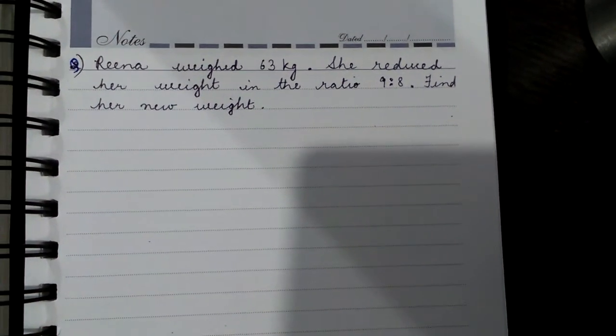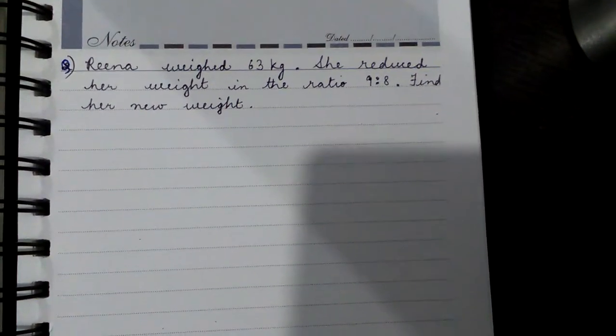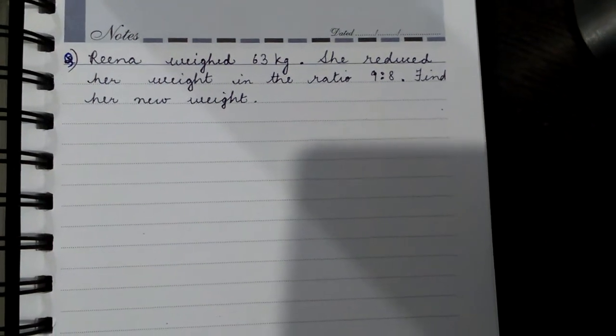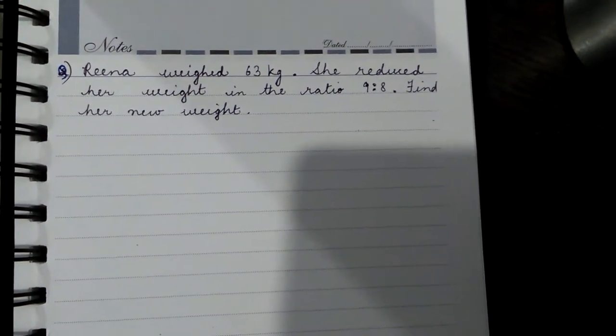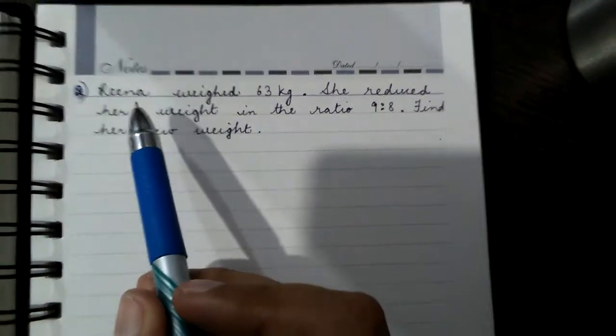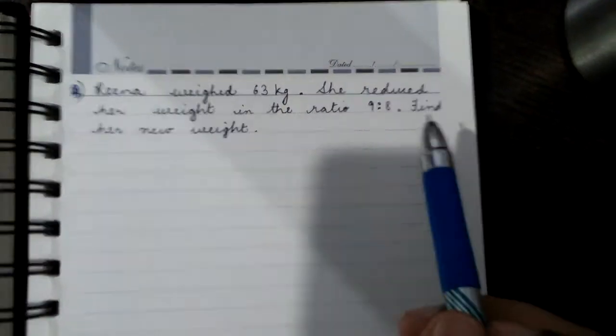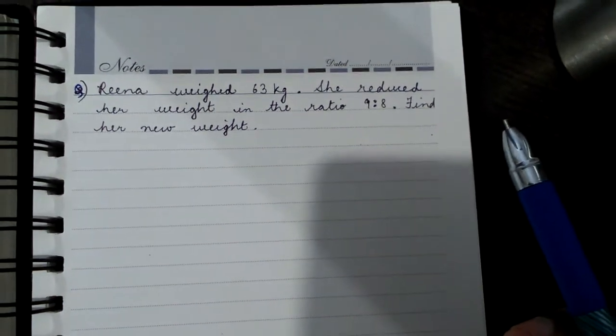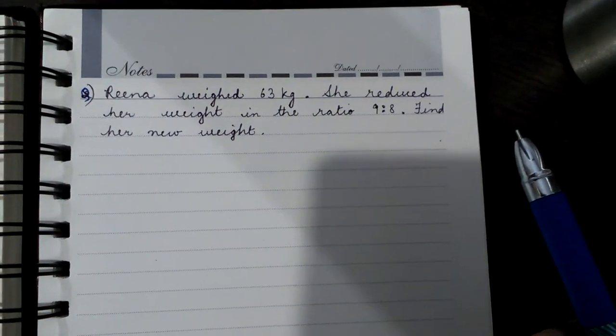Welcome back to my channel, Math Solutions. Today I'm going to discuss another question on ratio and proportion. The question is: Rina weighed 63 kg. She reduced her weight in the ratio 9 is to 8. Find her new weight.